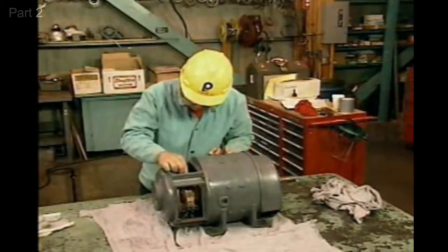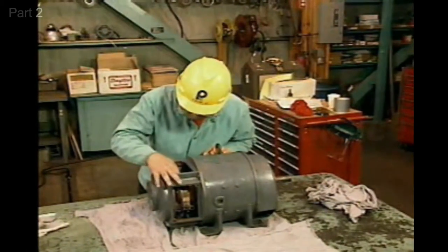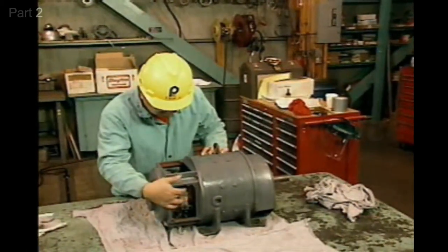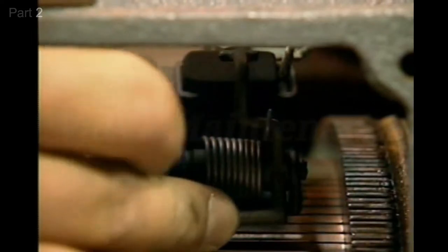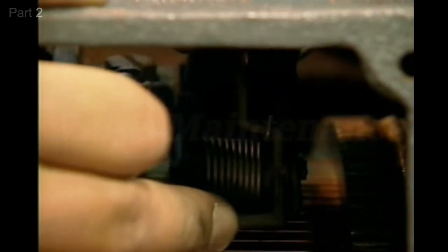After the interior of the motor has been thoroughly cleaned, the next step is to inspect the brushes and the brush rigging. The brush rigging includes the brush holders and the brush tensioning devices.